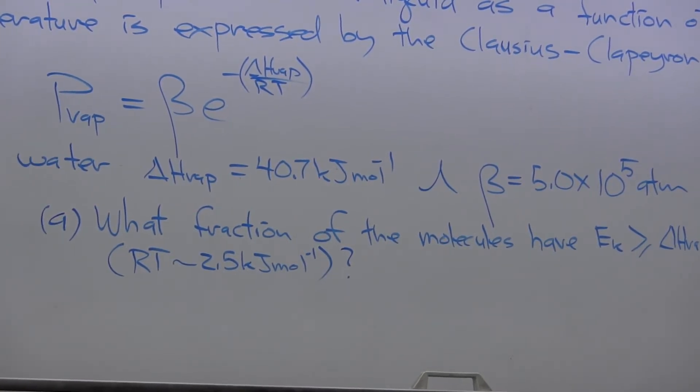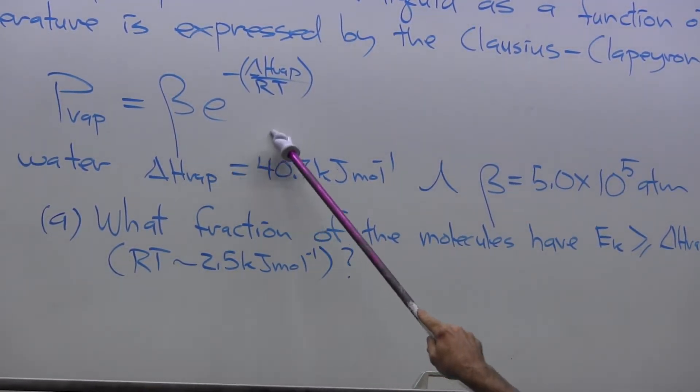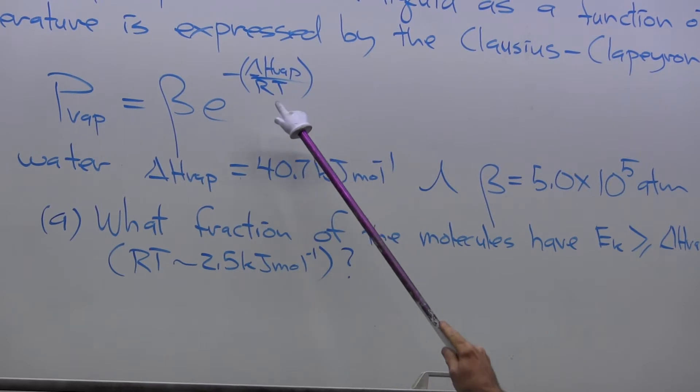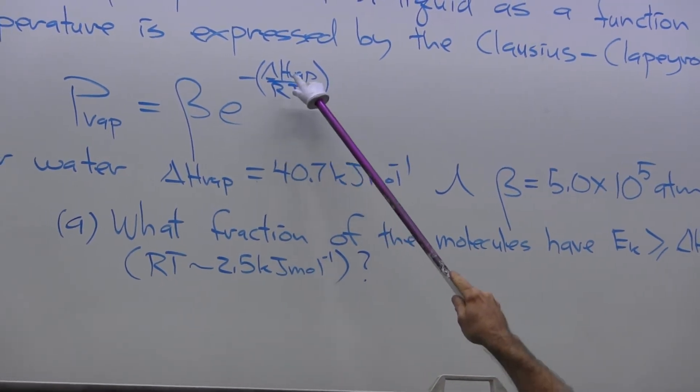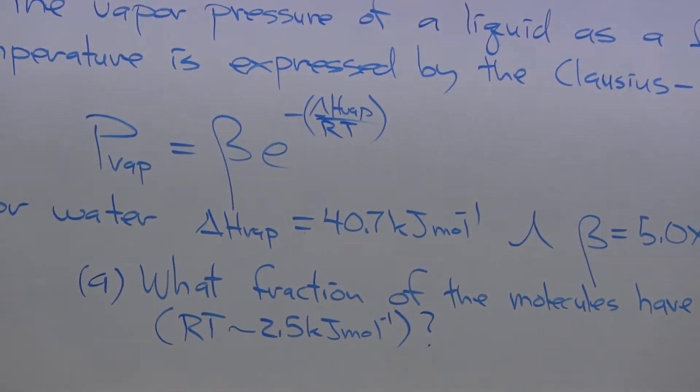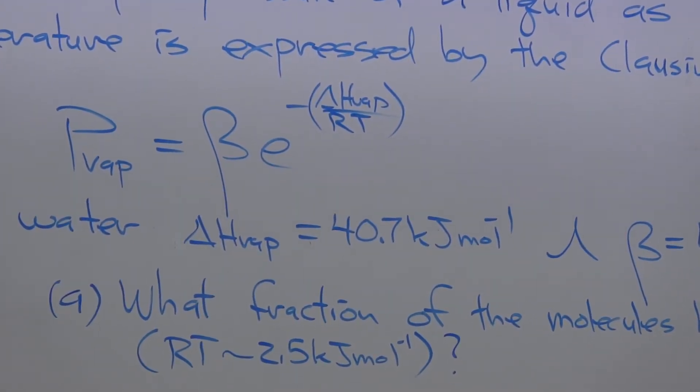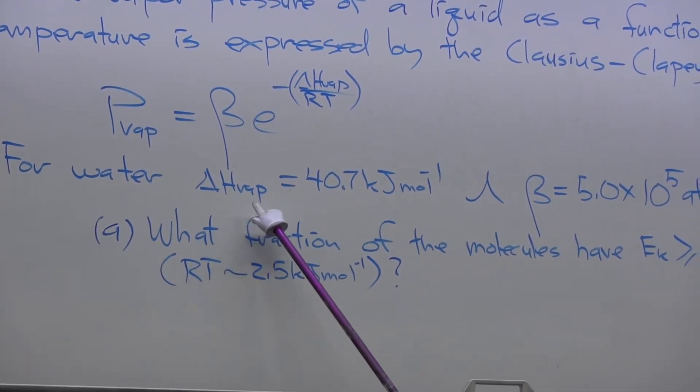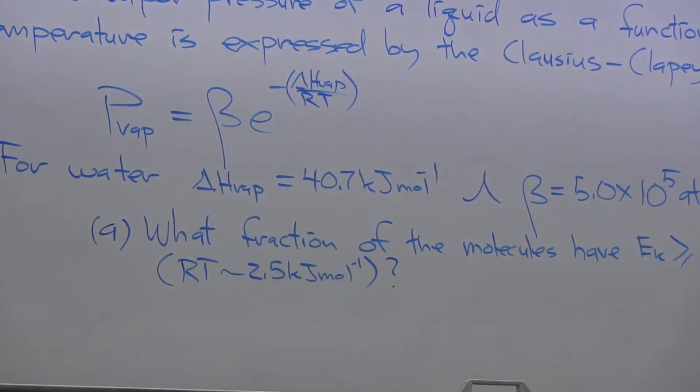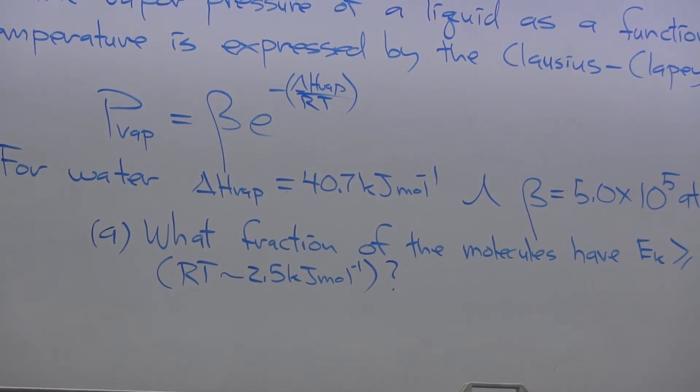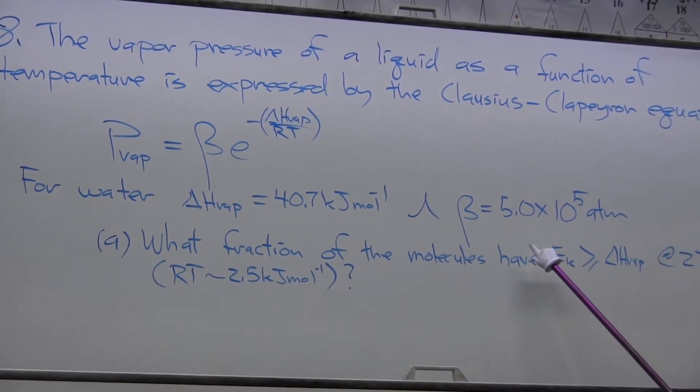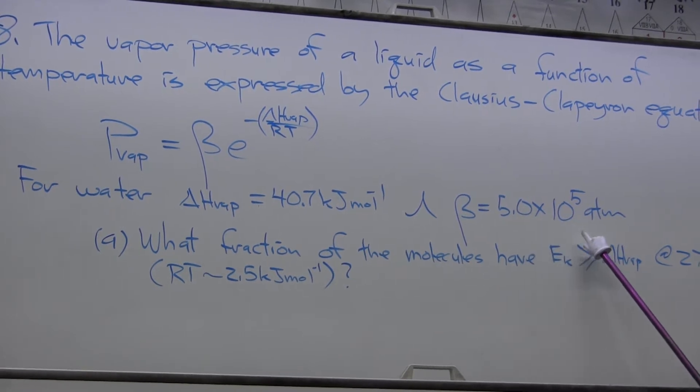Now you will recognize this exponential term as a Boltzmann factor, and it represents the fraction of the molecules at temperature T that are going to have a kinetic energy greater than or equal to the enthalpy of vaporization, delta H vaporization. We're given that for water, delta H vaporization equals 40.7 kilojoules per mole, and the beta term is 5.0 times 10 to the fifth atmospheres.